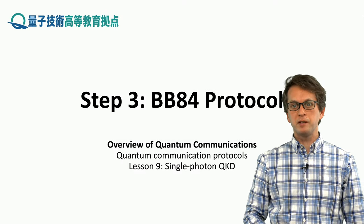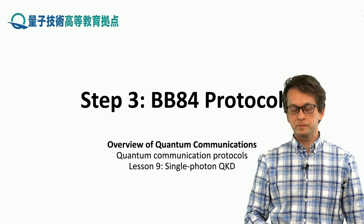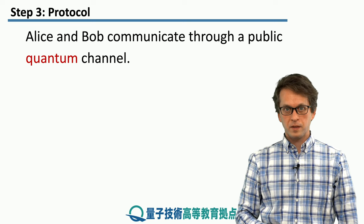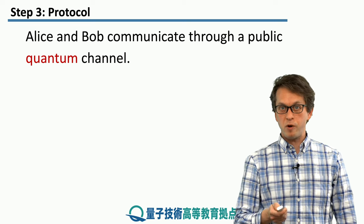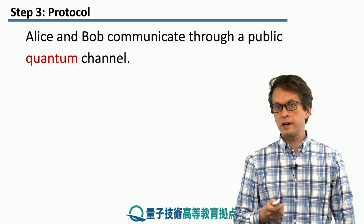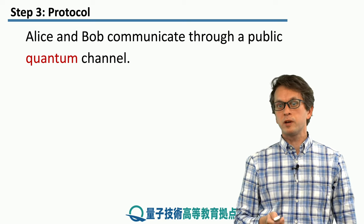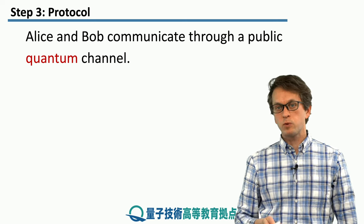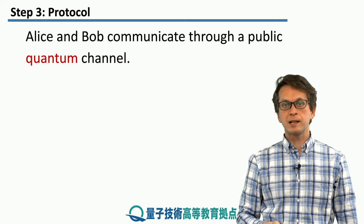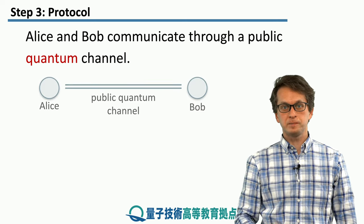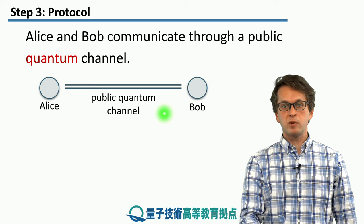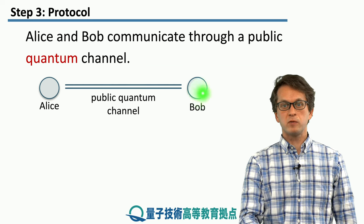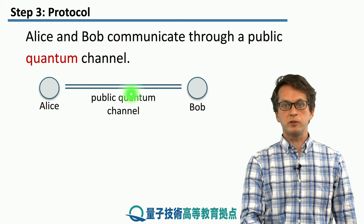Step 3: BB84 protocol. This protocol is a quantum protocol, therefore Alice and Bob can utilize a public quantum channel as well as their public classical channel. Here we have Alice and Bob, and they can communicate over this public quantum channel.